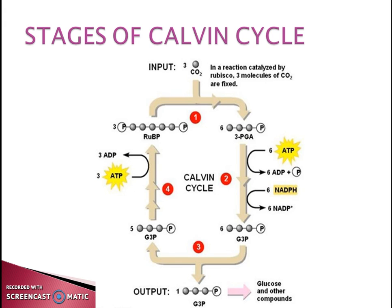The Calvin cycle has three main phases: the carboxylation phase, the reduction phase, and the regeneration phase. In the carboxylation phase, the carbon dioxide acceptor molecule RuBP is carboxylated to form 3-PGA (3-phosphoglycerate). Then comes the reduction phase, where PGA is reduced to triose phosphate, and most of the ATP and NADPH are used up. One triose phosphate is exported to form glucose and other compounds; the rest regenerate the 5-carbon acceptor molecule RuBP in the regeneration phase.